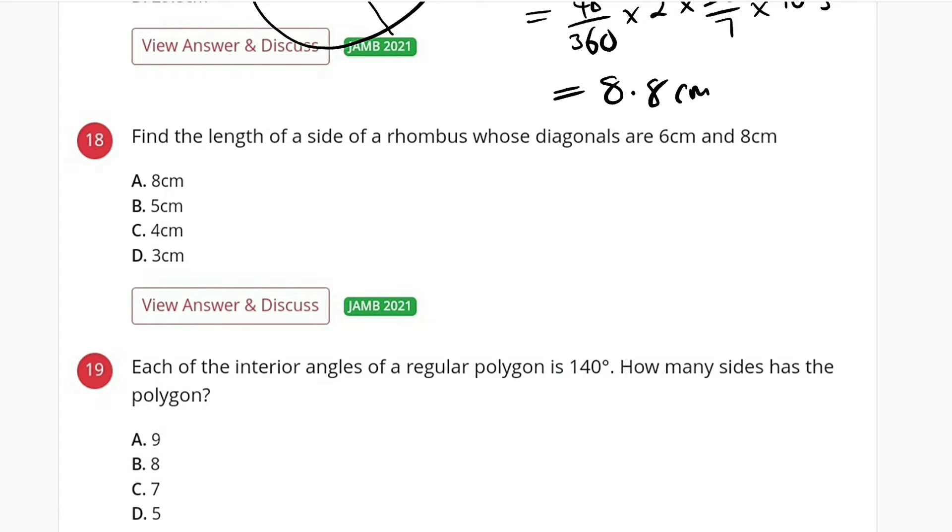You know a rhombus is a kind of square but a compressed square, so it looks like a kite but all sides are equal. So it's something like this.